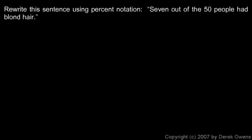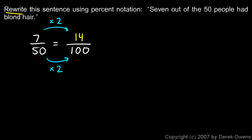Here's one more example. We're told to rewrite this sentence using percent notation: 'Seven out of the 50 people had blond hair.' So we have 7/50, and we want to express that as a percent. That means we need to express it as a fraction with a denominator of 100. So 50 had to be multiplied by what to give me 100? Well, 50 times 2 is 100. So we'll go up to the numerator and also multiply it by 2, which gives me 14. So 7/50, or 7 out of 50, is the same fraction as 14/100. This would be equal to 14%. So we would write: '14% of the people had blond hair.'